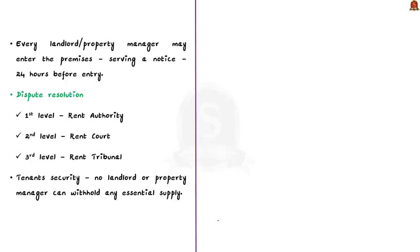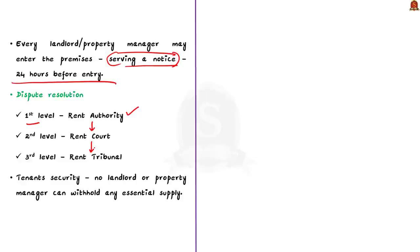Every landlord or property manager may enter the premises on rent after serving a notice to the tenant at least 24 hours before entry. The Model Act also describes the rights and obligations of both landlord and tenant. If any dispute emerges, parties must approach the rent authority first, then the rent court, and then the rent tribunal. No landlord or property manager can withhold any essential supply to premises occupied by the tenant.